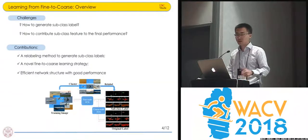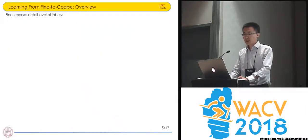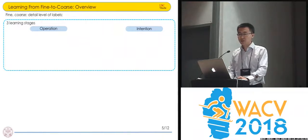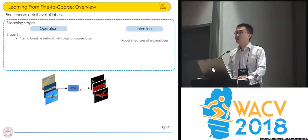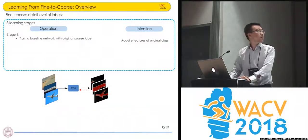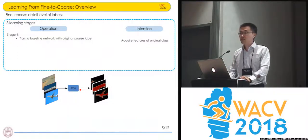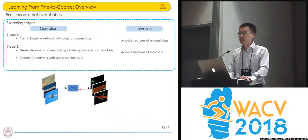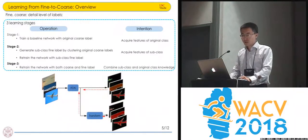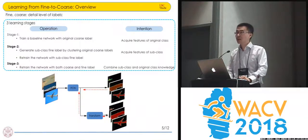The network architecture overview is shown here. Fine and coarse refers to the detail levels of labels. We call the original labels our coarse labels and the subclass labels as the fine labels. The first stage is that we train our baseline network with the original coarse label. The second stage is that we generate subclass fine labels by clustering the original coarse labels, and then we train the network with the subclass label. Finally, we train the network with both the coarse and the fine label.